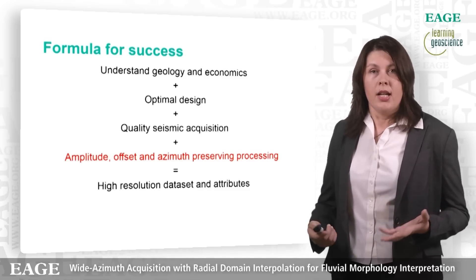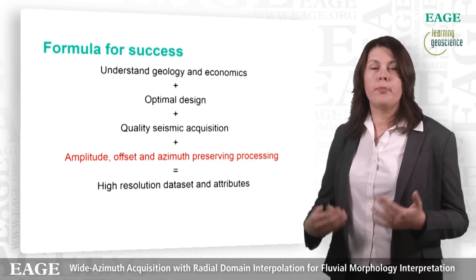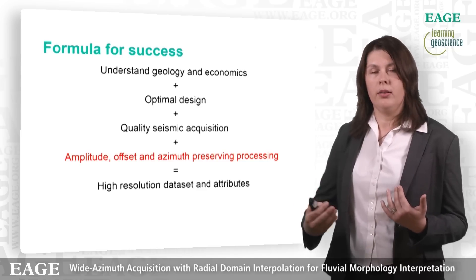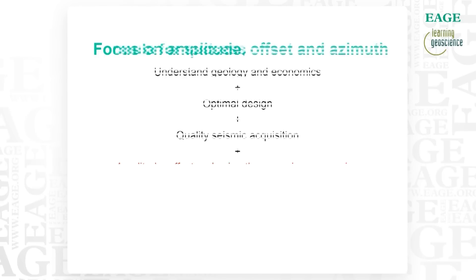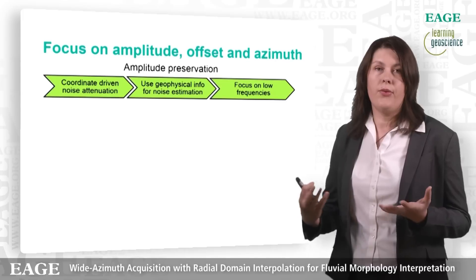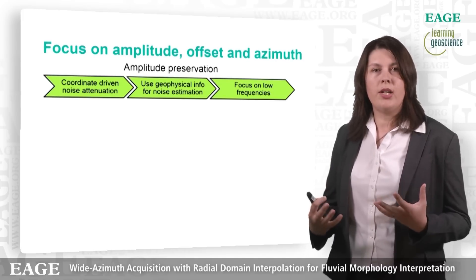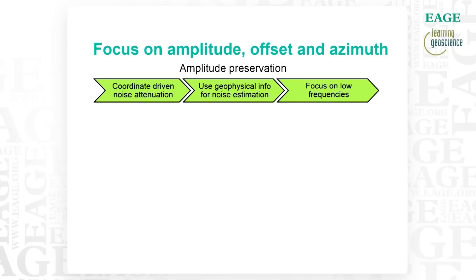The next step is data processing. Once you have acquired all that data with your optimal design, you need to make sure you preserve all valuable amplitude, offset and azimuth information during all processing stages. We start with coordinate-driven noise attenuation — since we know exactly where all sources and detectors were positioned in the field, we use this information in noise attenuation. We also use geophysical information for noise estimation and focus on low frequencies from early stages of processing.